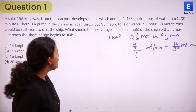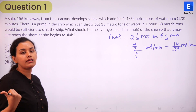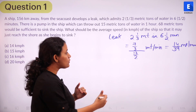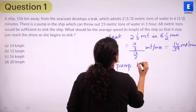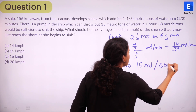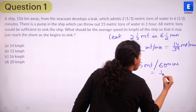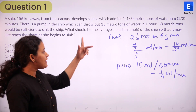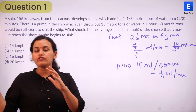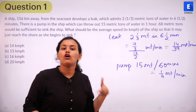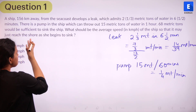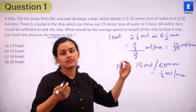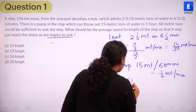The next information given is that there is a pump in the ship which can throw out 15 metric tons of water. Just as the leak takes in water, the pump throws it out. The pump's rate is 15 metric tons per hour, which is 60 minutes, simplifying to 1/4 metric ton per minute. The leak is doing more work than the pump because the ship eventually sinks, meaning more water is entering than is being expelled.